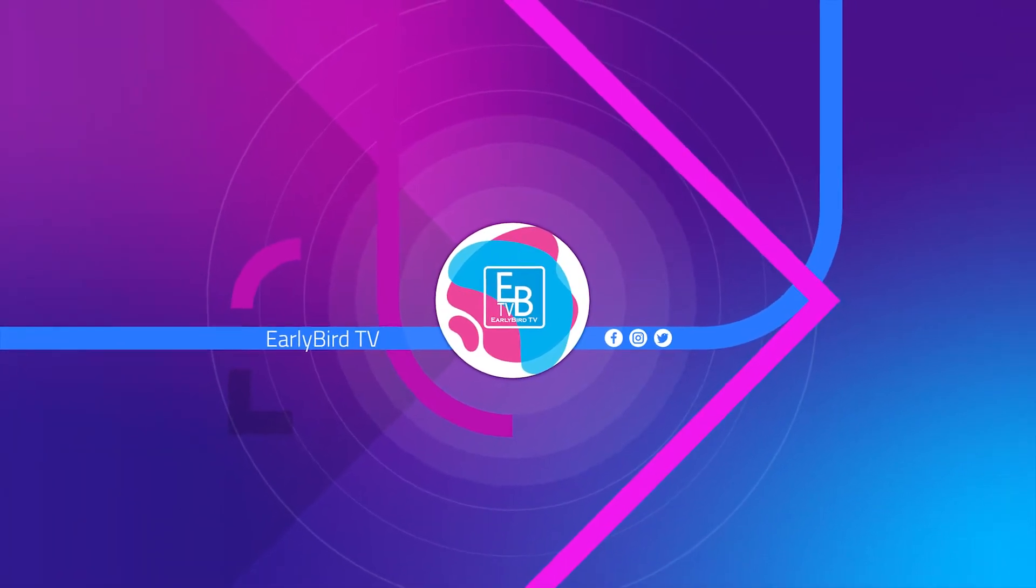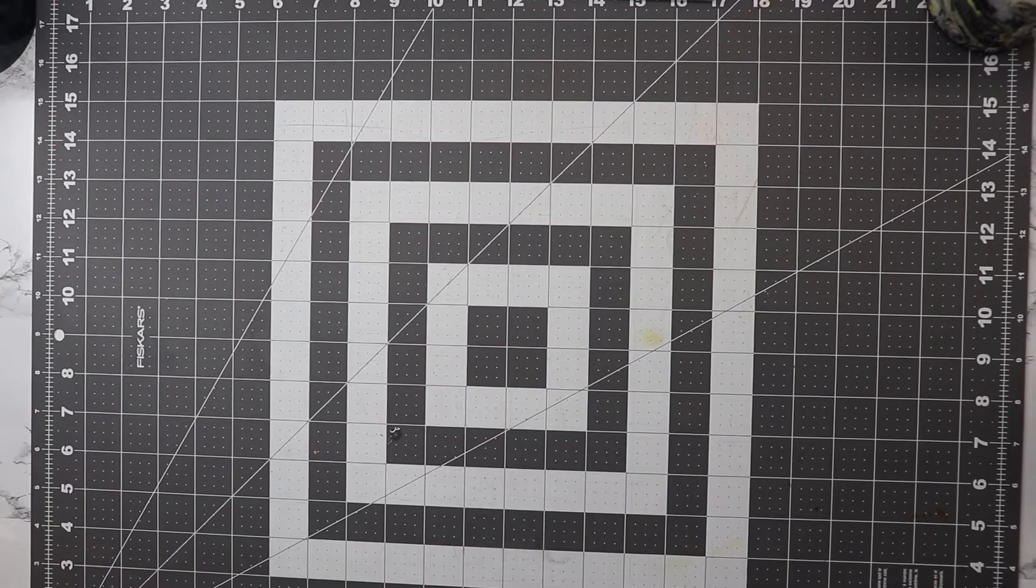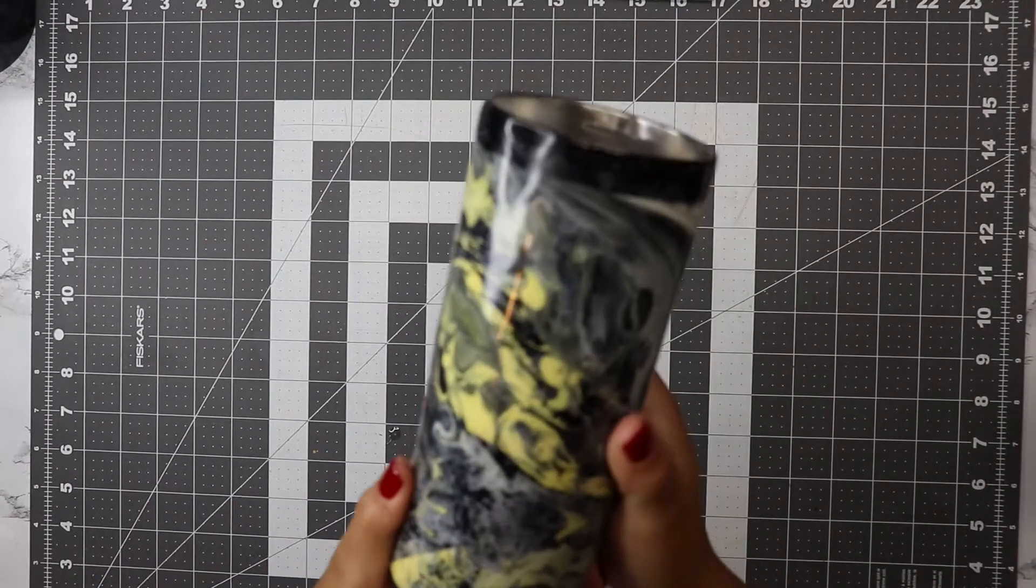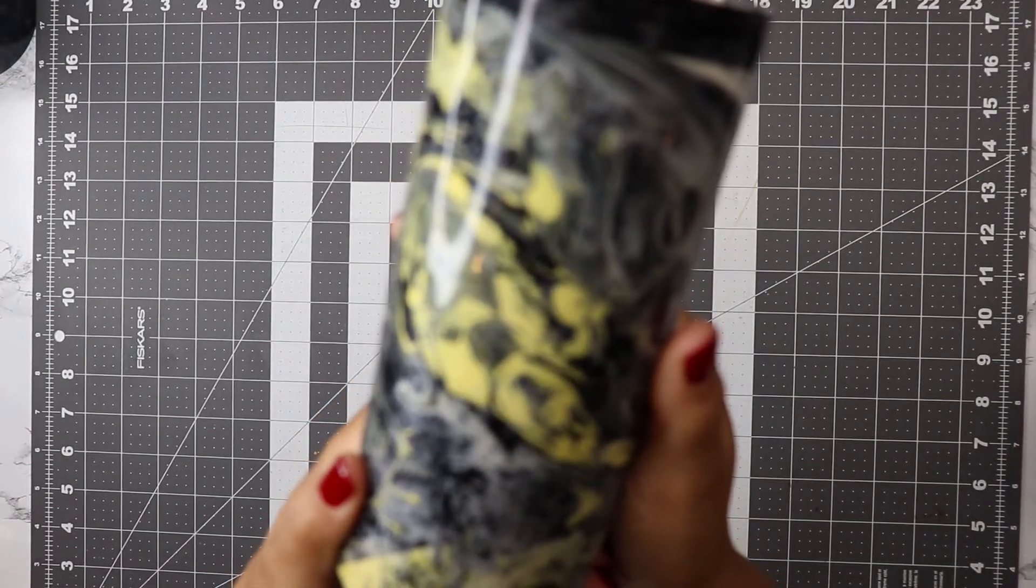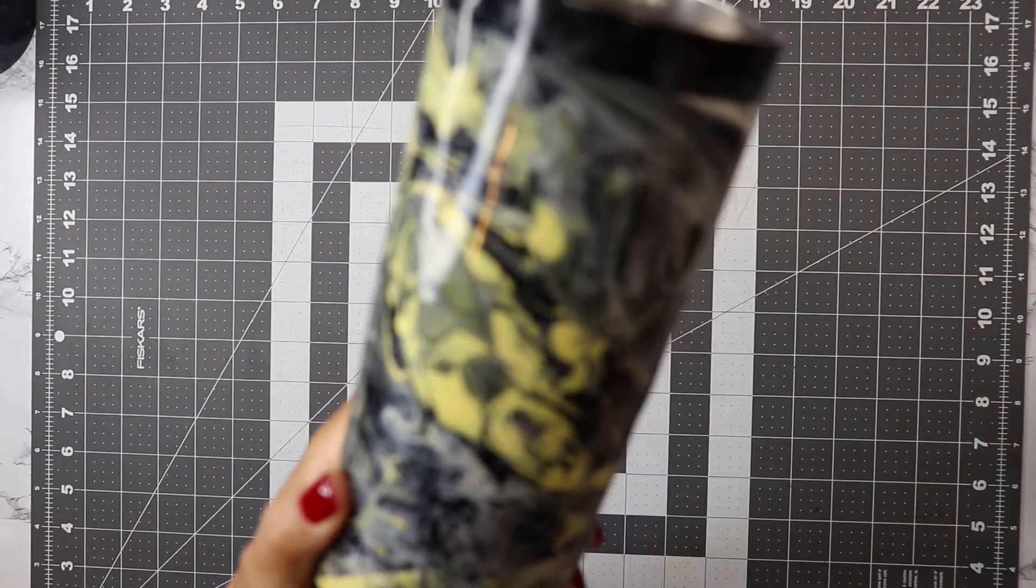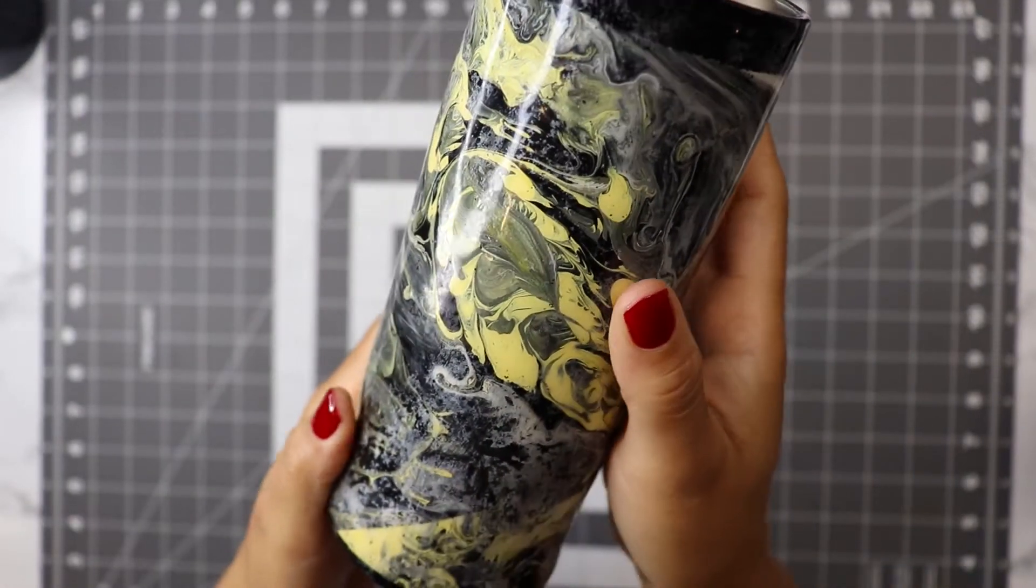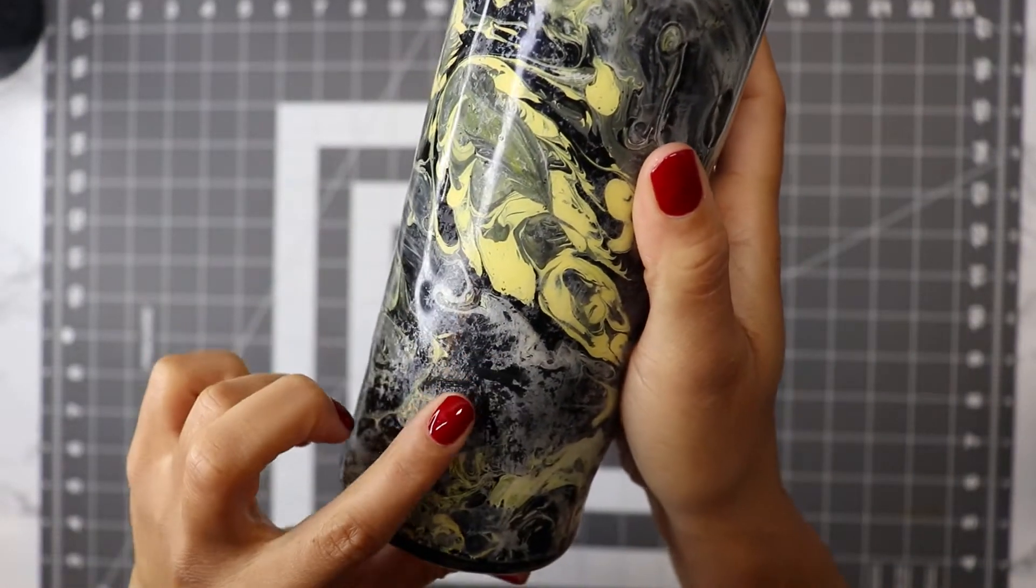So you bought that nice new tumbler, you're all excited and you go to wash it and you leave it in the dishwater way too long, and now you've got this white haze all over your cup. Well today I'm going to show you how you can get rid of that haze.